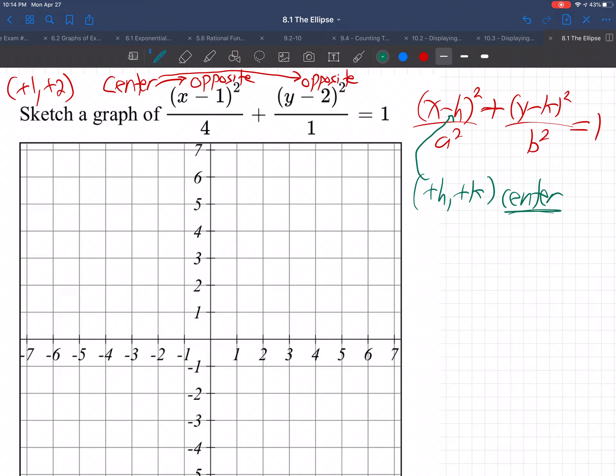See how they took what was next to x there, negative h, and they took the opposite. And they took what was next to y there, which was negative k, and they took the opposite and made it plus k. So it's opposite, opposite of what's next to x and y is the center. So the center is going to be 1, 2.